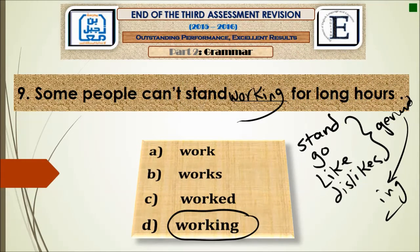Question number nine: 'Some people can't stand ___ for long hours.' Stand, like go, like, and dislike, is followed by a gerund — the ing form. So the answer is working: 'Some people can't stand working for long hours.'